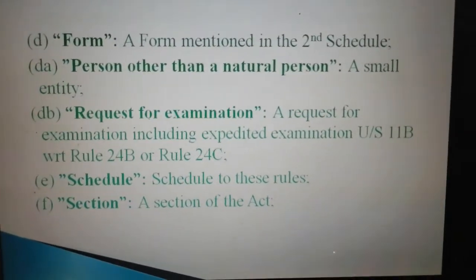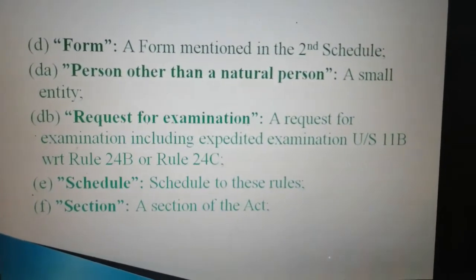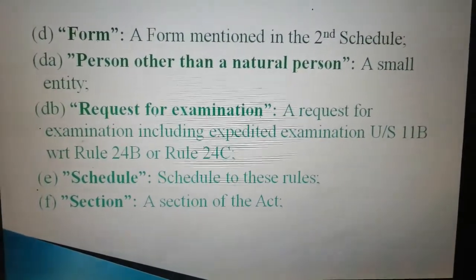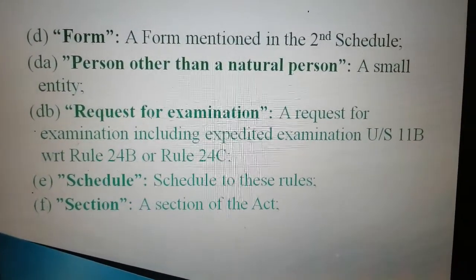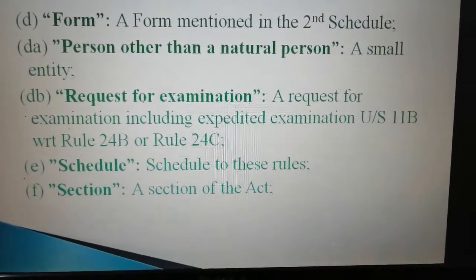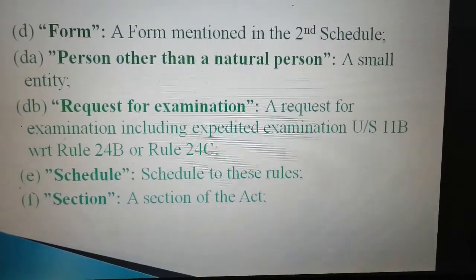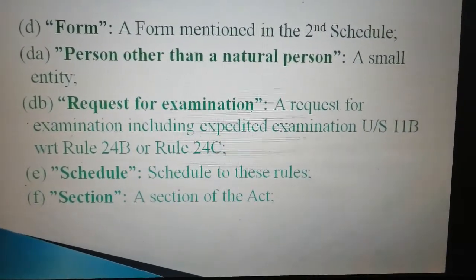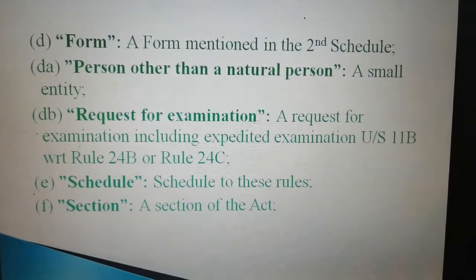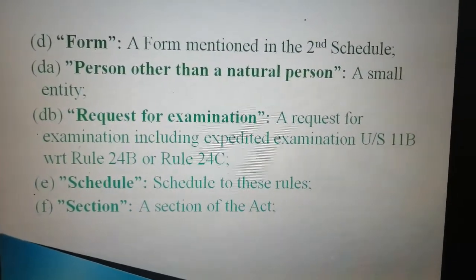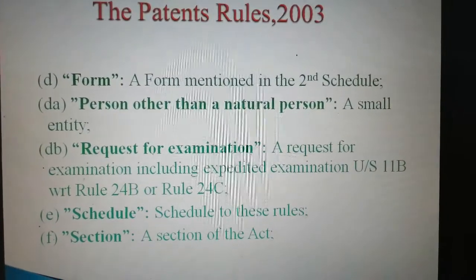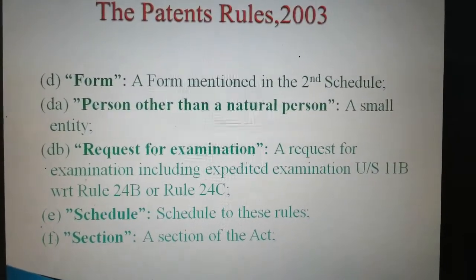Clause D: the term is 'Form' — a form mentioned in the second schedule. Then Clause DA: the term is 'person other than a natural person' — this is a small entity. Then Clause DB: 'request for examination' — a request for examination including expedited examination under Section 11B with respect to Rule 24B or Rule 24C. Clause E: 'Schedule' — this means schedule to these rules. Clause F: 'Section' — a section of the Act, that means the Patents Act.